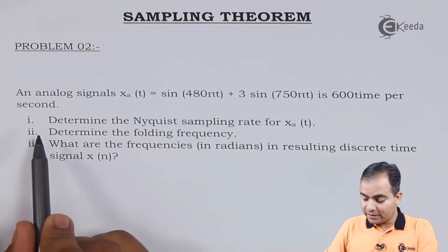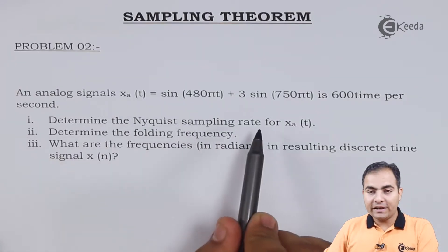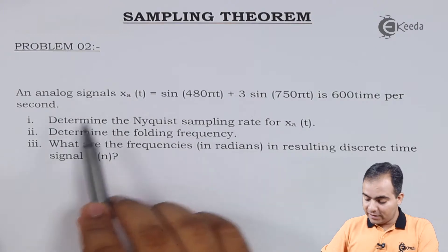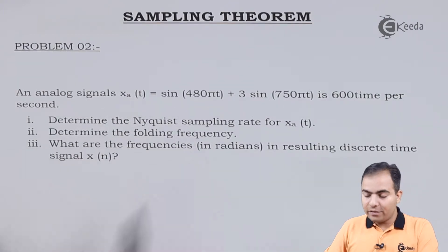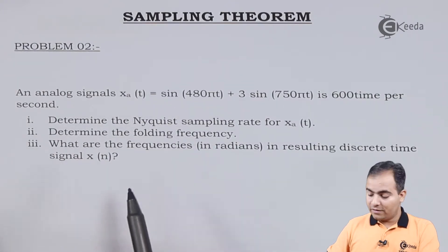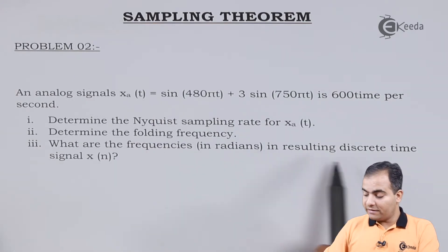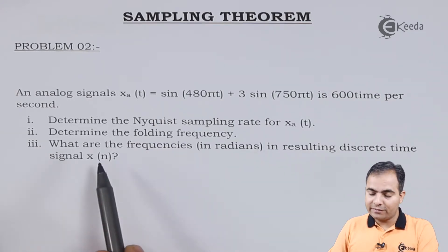Now what is asked? First, determine the Nyquist sampling rate for xa(t). Second, determine the folding frequency. Third, what are the frequencies in radians in the resulting discrete time signal x(n).